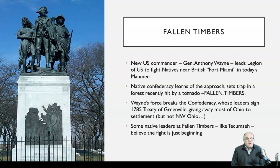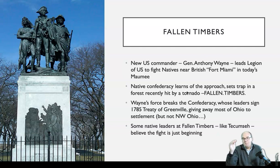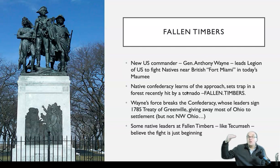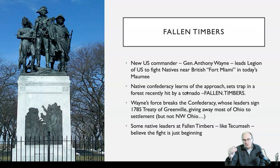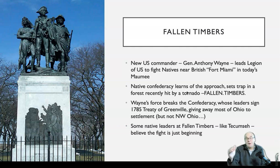When the Confederacy was broken, leaders like Little Turtle from the Miami Nation said it was time to sign a treaty. The agreement they signed in southern Ohio is called the Treaty of Greenville in 1795. It gave away most of Ohio to settlement but kept Northwest Ohio for the Native Americans — the entire Maumee River Valley going toward Sandusky, Michigan, and Indiana was supposed to remain Indian territory. But some Native leaders at Fallen Timbers, like a young Tecumseh, believed the fight was just beginning — and they were absolutely right. Fallen Timbers was not the end; it was the beginning of the end for the rich and vibrant Native cultures of Northwest Ohio.